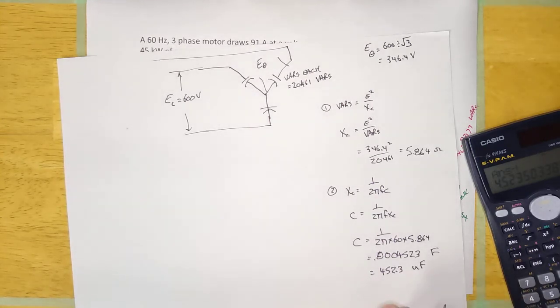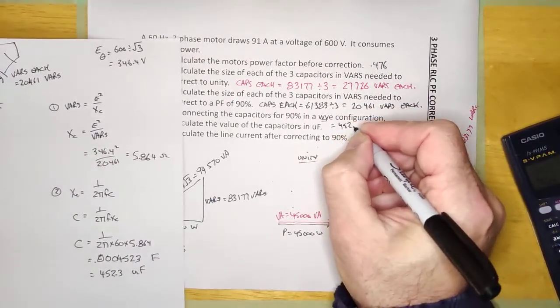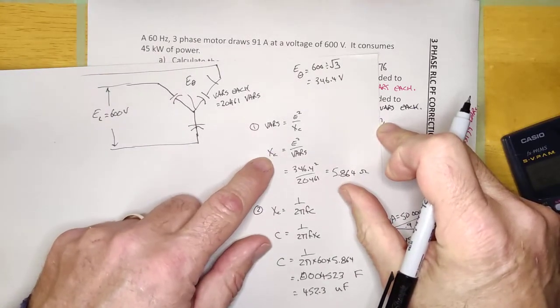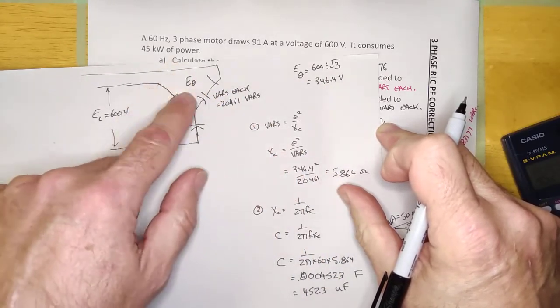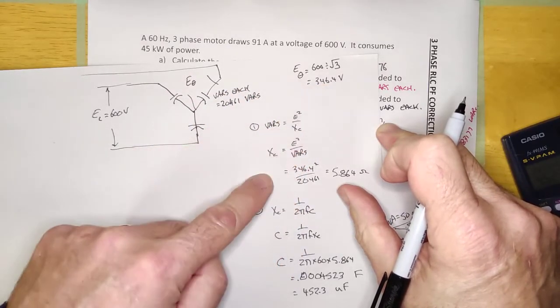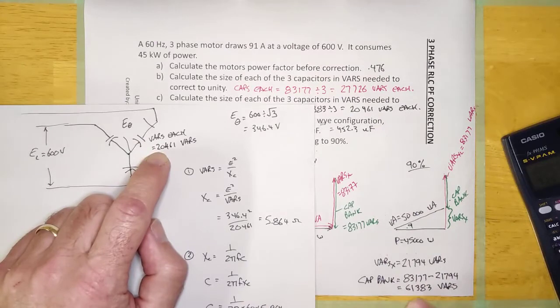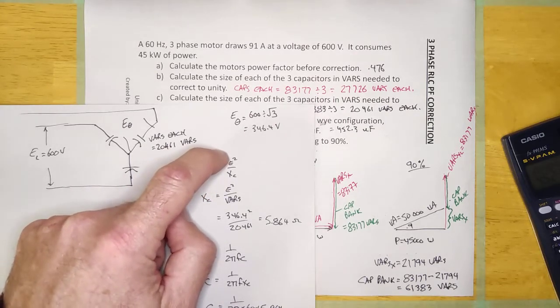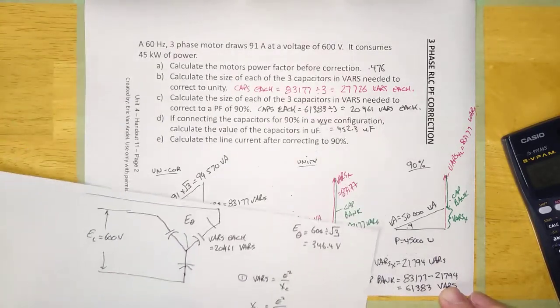And that is the answer. All that work for this one, 452.3 microfarads. What did we do there? Same as single phase. We figured out how many ohms it was, but we need to be careful to use the phase value of voltage. And since it was Y, I had to calculate it using divide by root 3. Step 2 was the same as single phase. Also, you must use the value of the capacitors each in here because there's also the whole bank. That's not going to work. So, you need the voltage dropping across the thing divided by the VARs of the thing, not the whole bank.